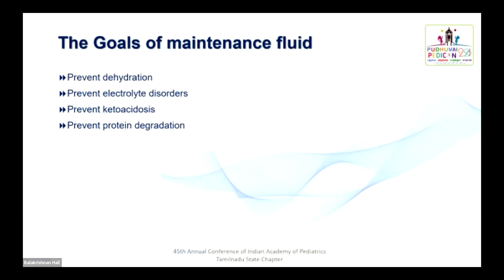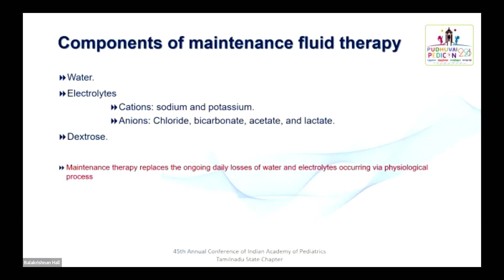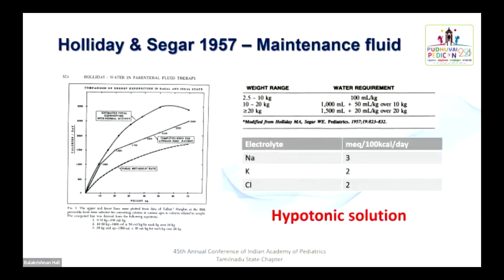The main components of fluid therapy are water, dextrose, and electrolytes like sodium and potassium — chloride is the usual accompanying anion; sometimes the patient needs bicarbonate, acetate, or lactate. Maintenance therapy basically replaces the ongoing daily losses of water and electrolytes occurring via physiological processes like respiration, temperature control, and minimal solute excretion via the kidneys.